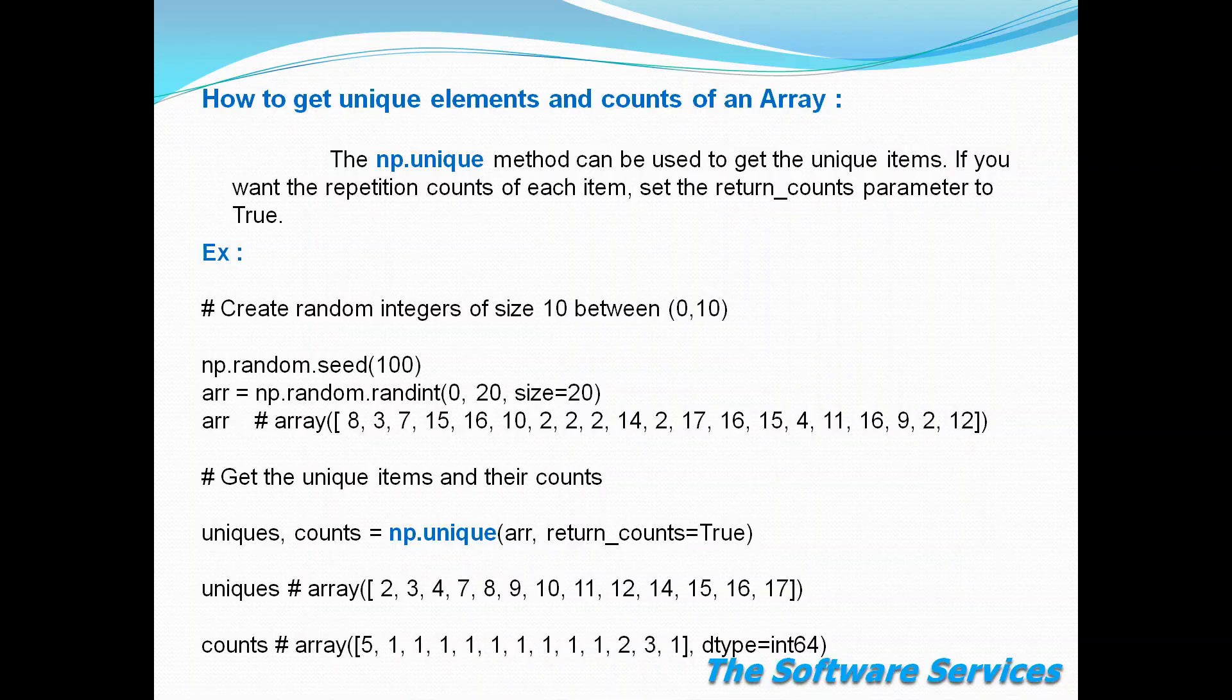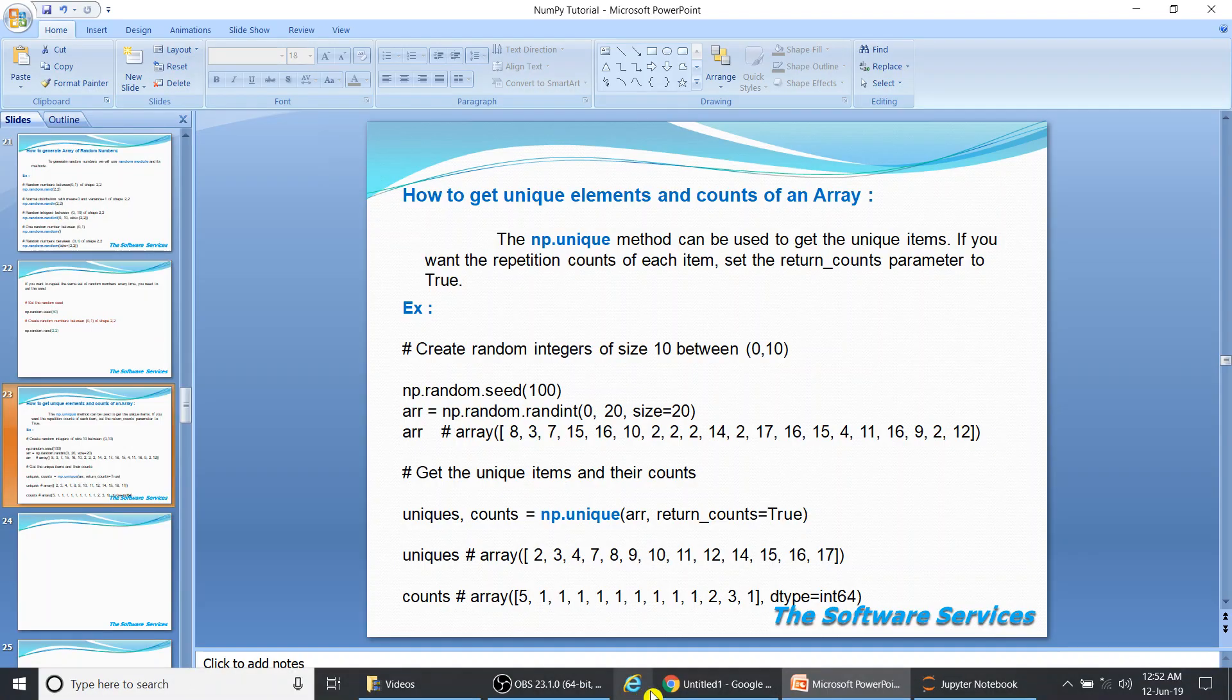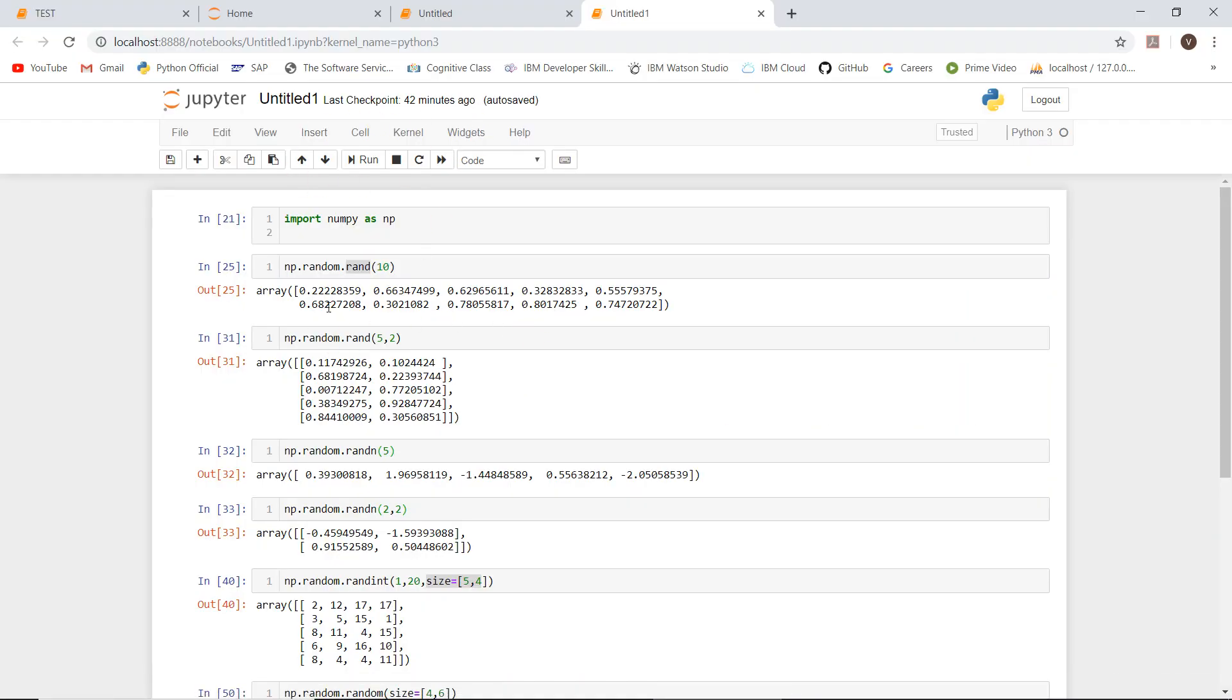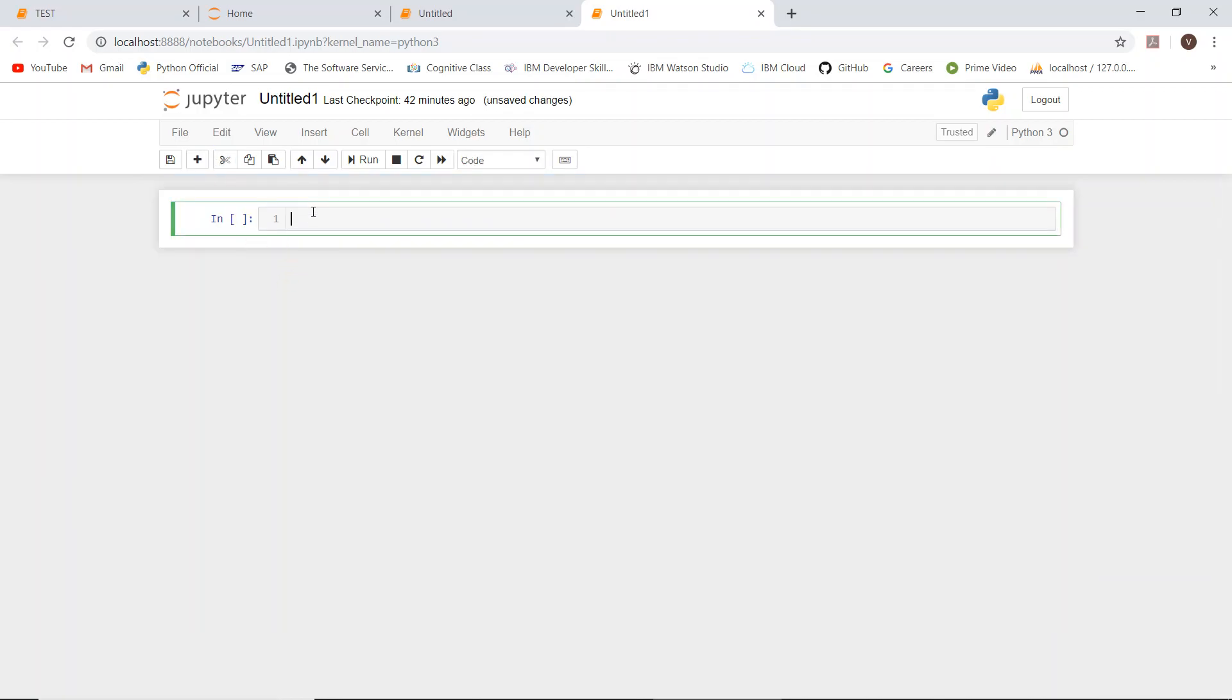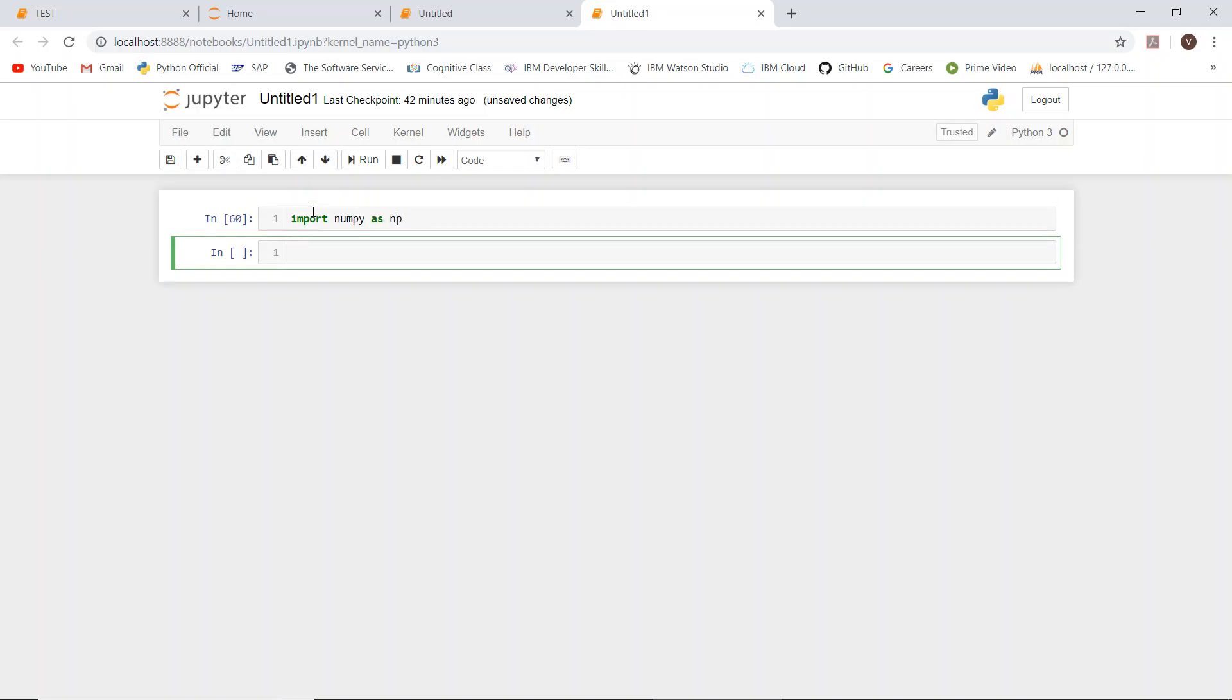jump into Jupyter notebook and check it out. Let's delete all these things - we don't need them. Just import numpy as np. After that, we need to generate a sequence: np.random.